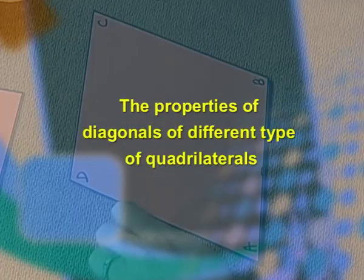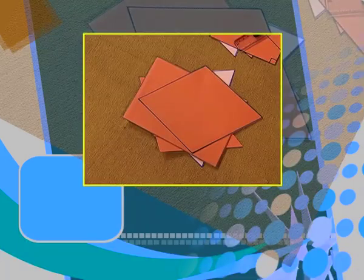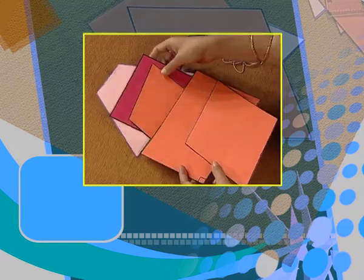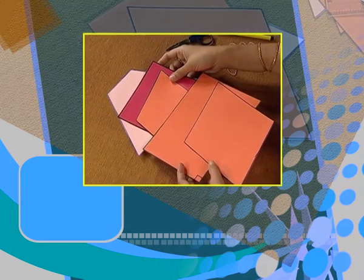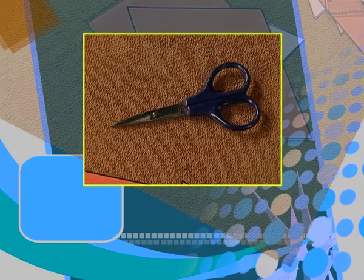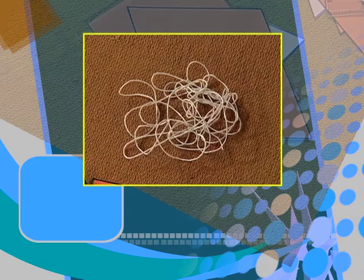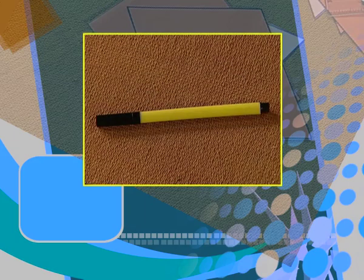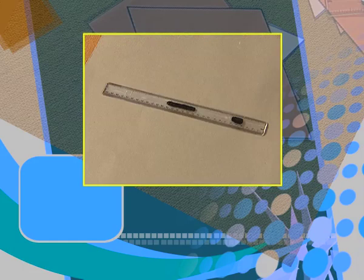Dear students, today we are going to explore the properties of diagonals of different types of quadrilaterals through an activity. For doing this activity, we require certain materials: cut-outs of geometrical shapes — the quadrilaterals which we are going to explore — a pair of scissors, some thread, a sketch pen, and a ruler.